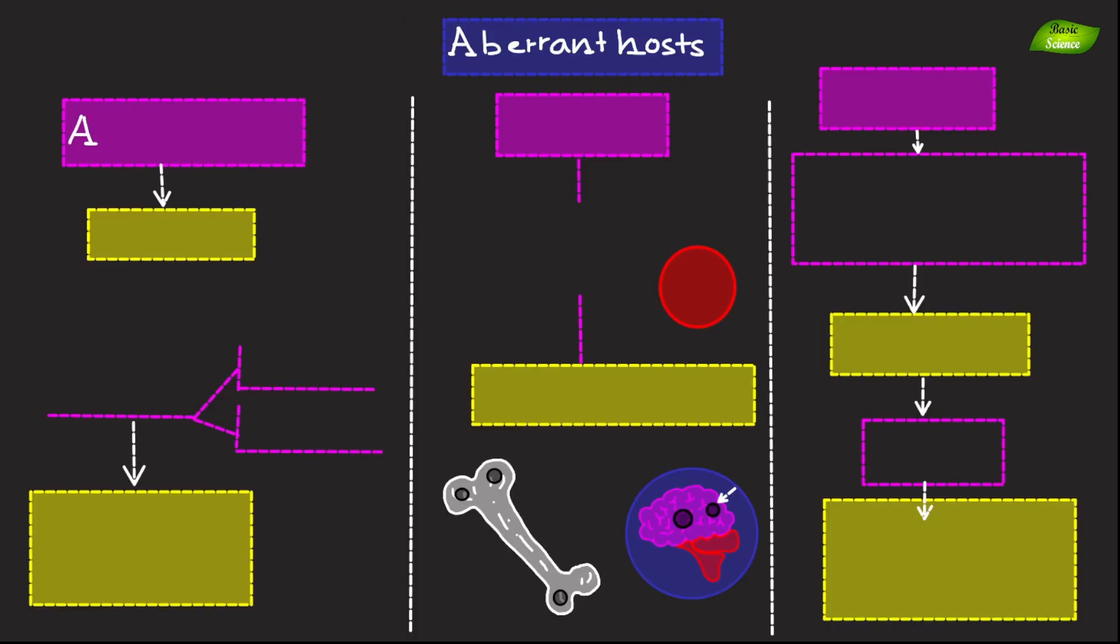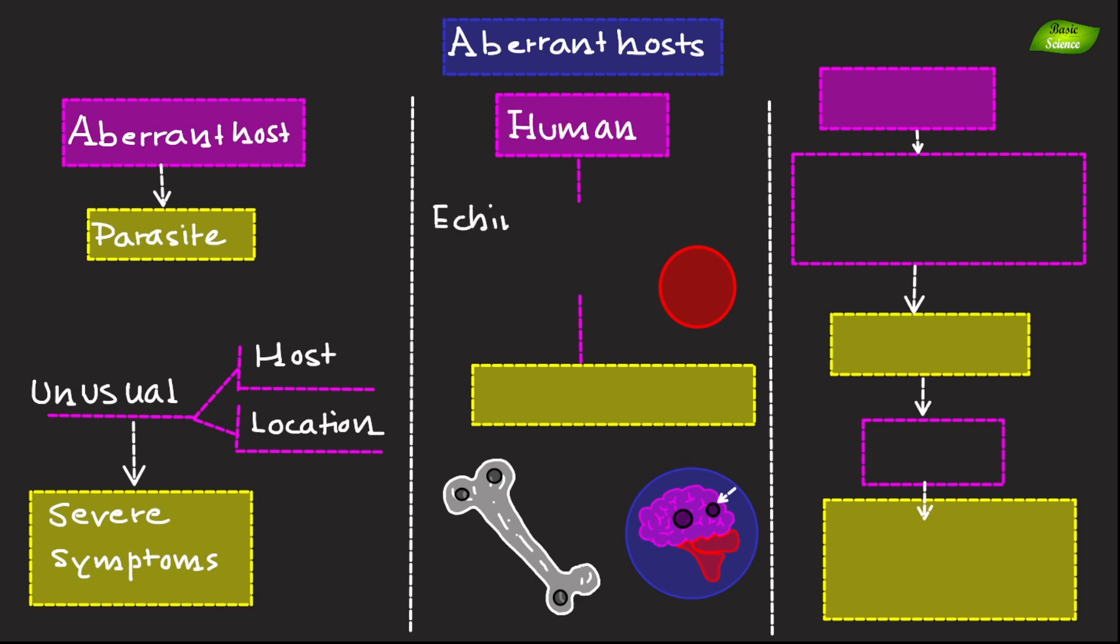Aberrant hosts are those in which a parasite infects an unusual location or unusual host species, leading to severe or atypical symptoms. Example includes humans for Echinococcus granulosus. Ingesting Echinococcus granulosus eggs can lead to humans developing hydatid cysts in atypical locations such as the brain or bones.